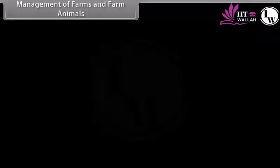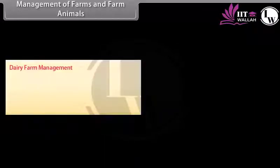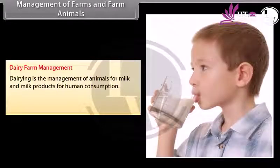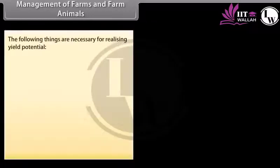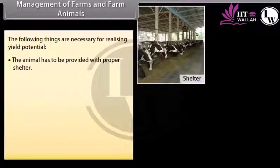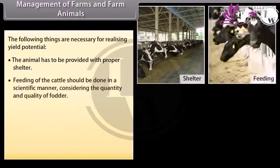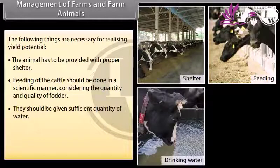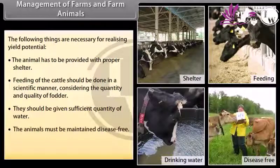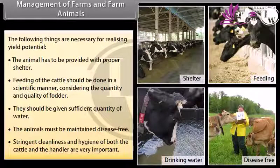Management of farms and farm animals: Dairy farm management. Dairying is the management of animals for milk and milk products for human consumption. Milk yield is dependent primarily on the quality of breed. The animal must be provided with proper shelter, feeding done in a scientific manner considering the quantity and quality of fodder, sufficient water, and be maintained disease free. Stringent cleanliness and hygiene of both the cattle and the handler are very important.